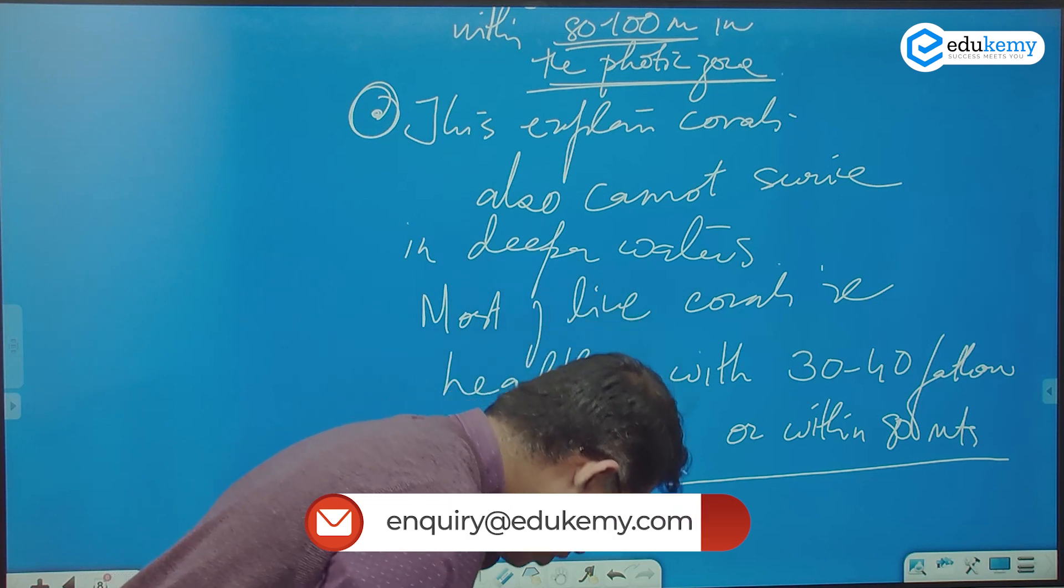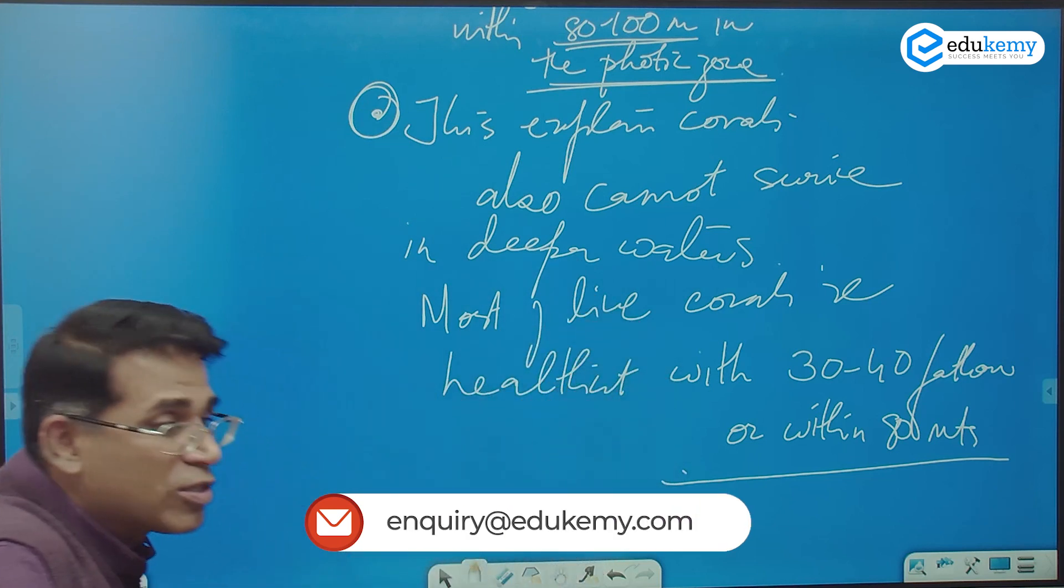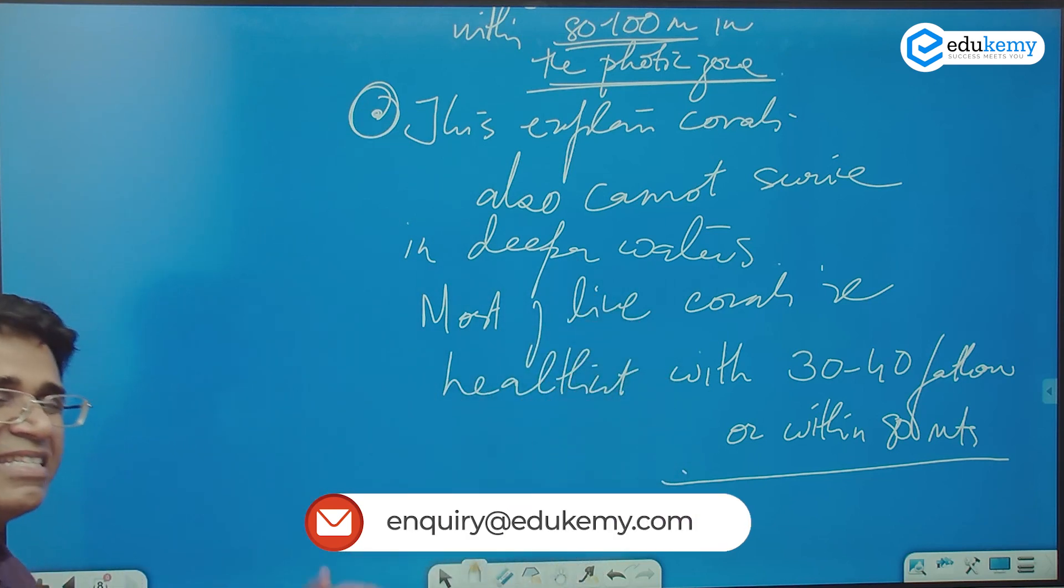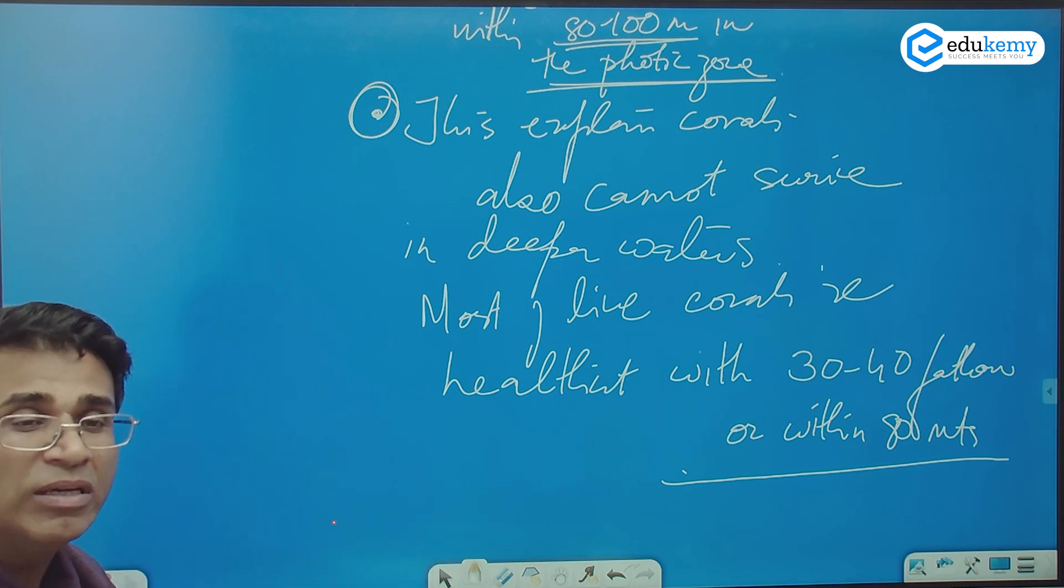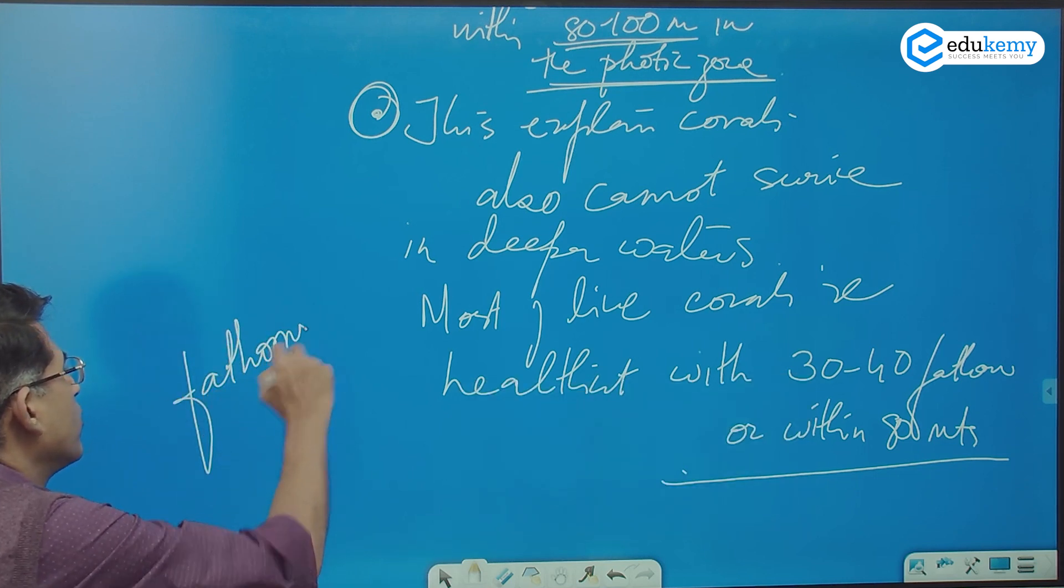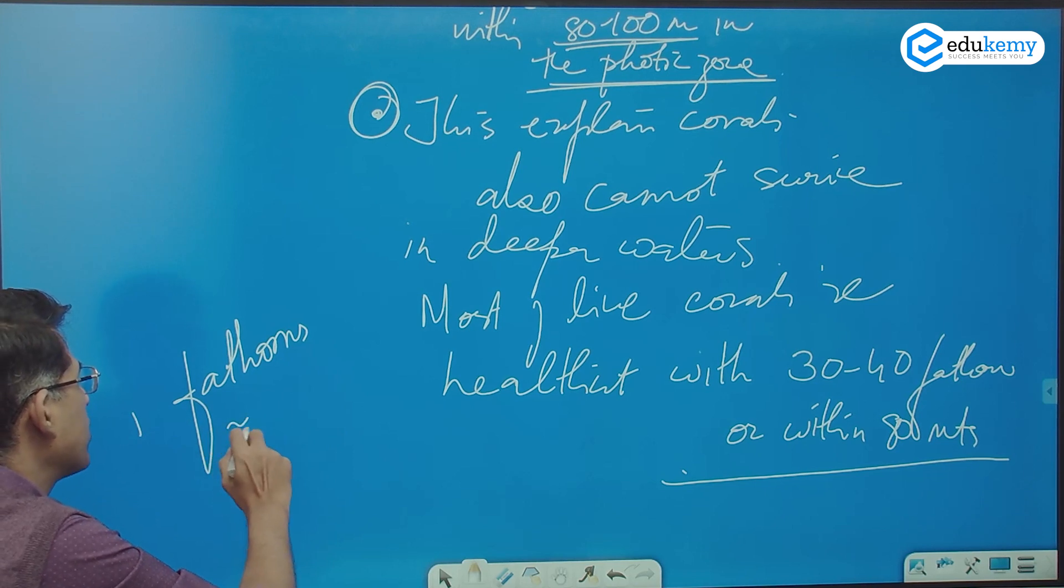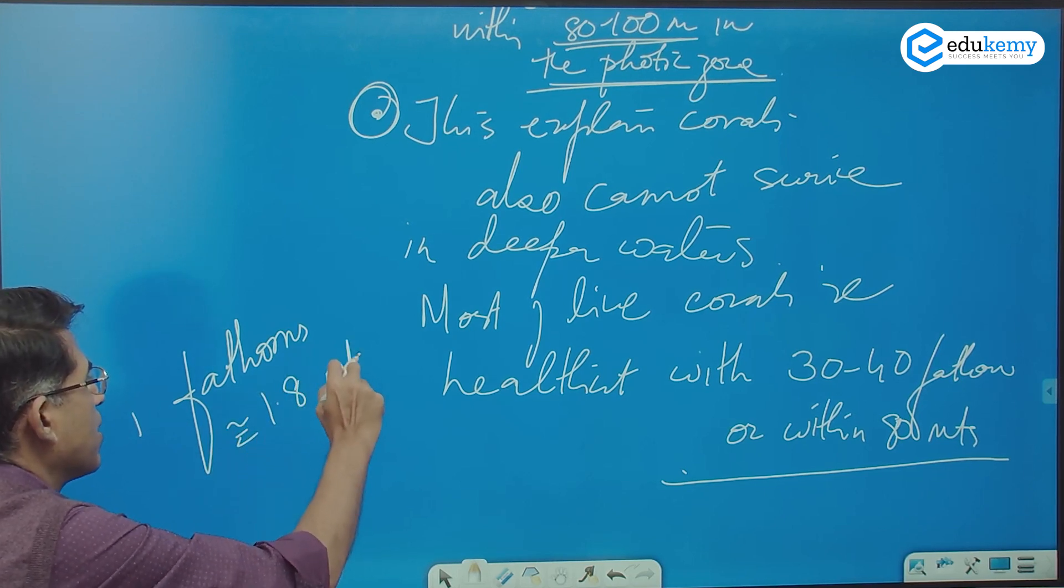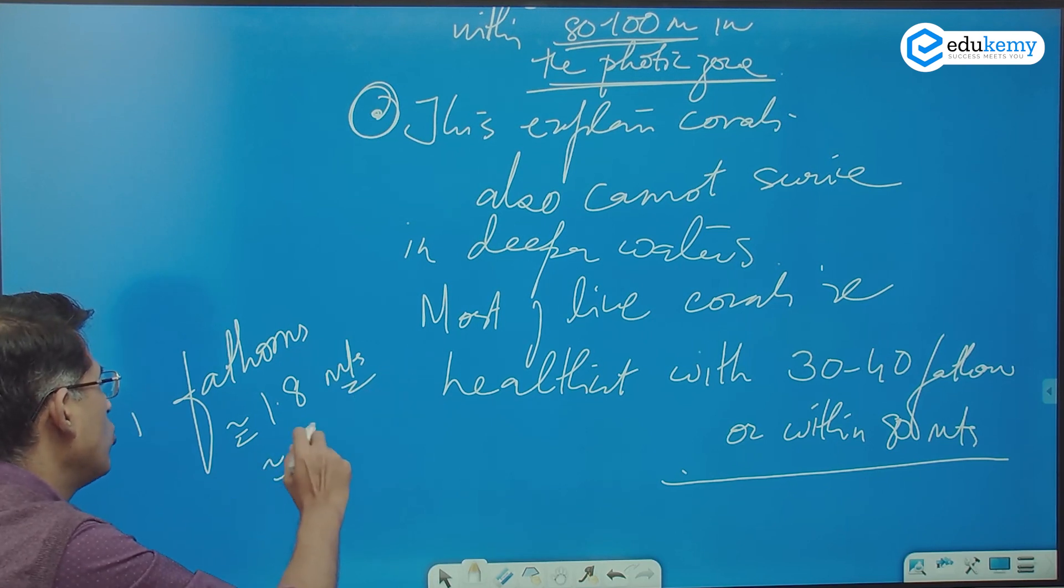In deep waters the corals can also get dissolved, but that is deep in 4000 meters. Fathom is one unit of depth. One fathom is approximately 1.8 meters, or approximately 2 meters.